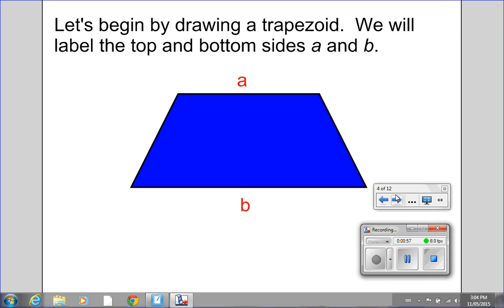So let's begin by drawing a trapezoid. And we're going to label the top and bottom sides A and B. We should also note that these are the two parallel lines in a trapezoid.